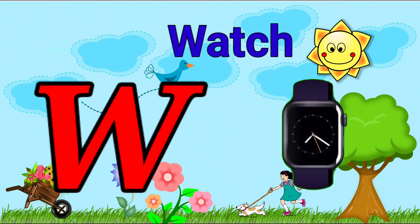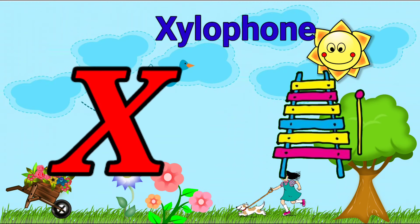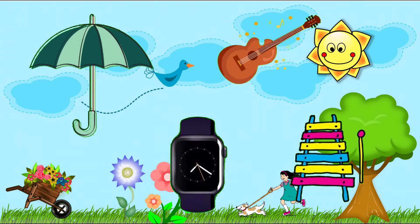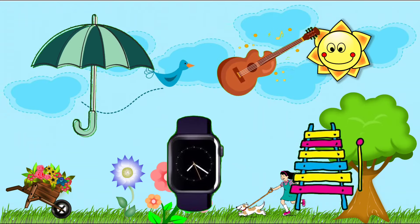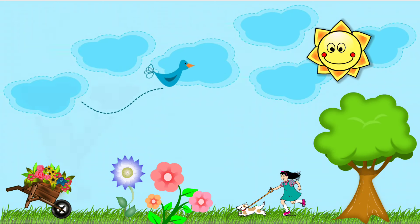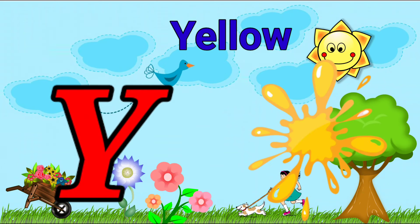w-w-watch. X is for xylophone, z-z-xylophone. Y is for yellow, ye-ye-yellow.